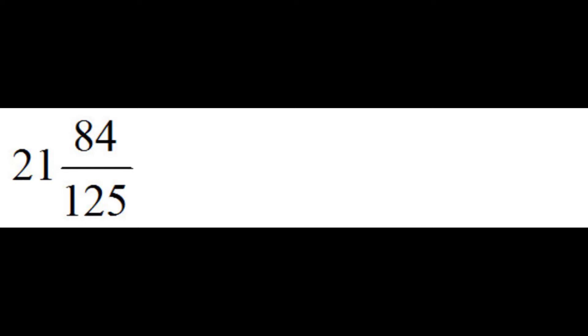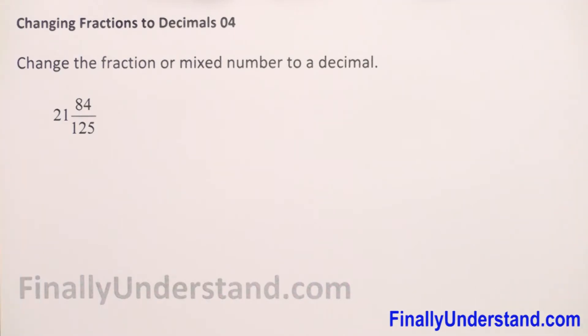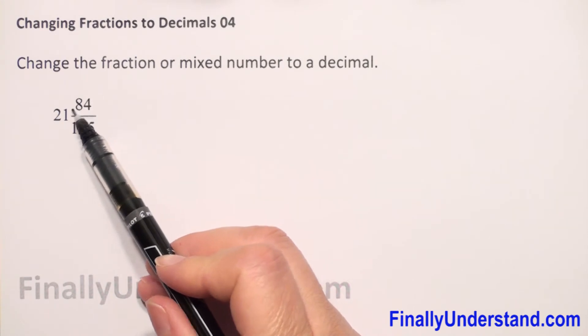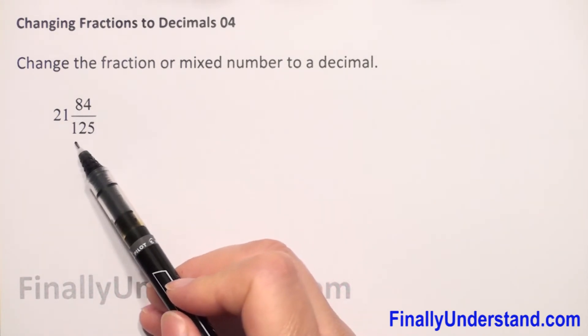We have a given mixed number and we have to change this mixed number to a decimal. How do we do this? When we have a mixed number, the whole number we always copy, and this fraction 84 over 125...